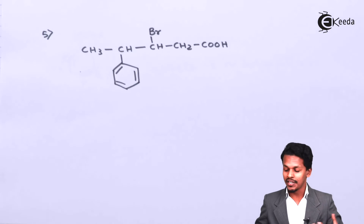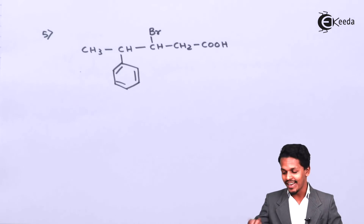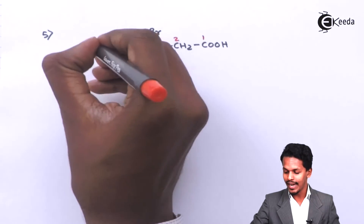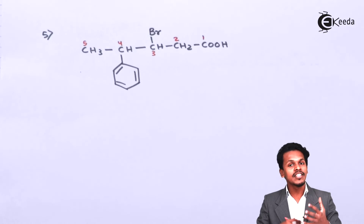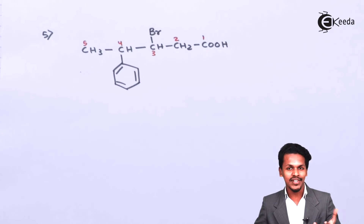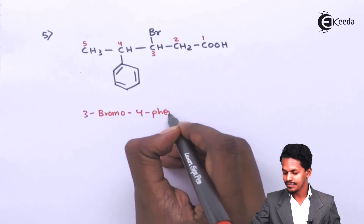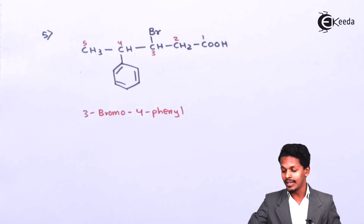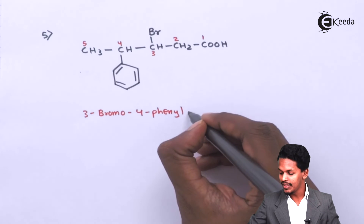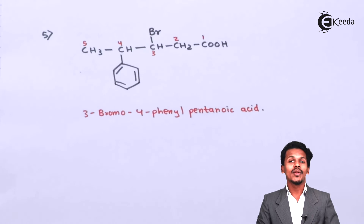For the fifth example, the carboxyl group is given priority as carbon 1, followed by carbons 2, 3, 4, and 5. A bromine atom is attached at carbon 3 and a phenyl group at carbon 4. With 5 carbons in the straight chain including the carboxyl group, the name is 3-bromo-4-phenylpentanoic acid.